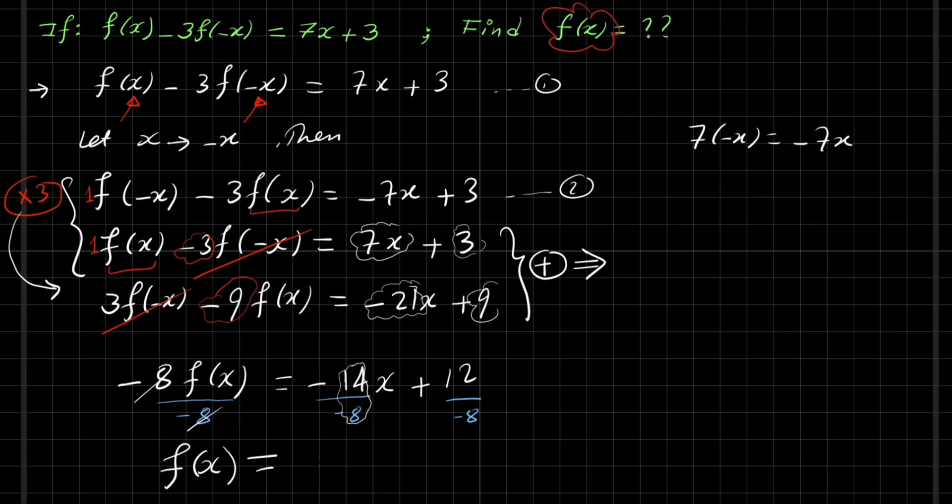And here minus, if we divide by 4 up and down, so this is 3 over 2. And this is the final answer for the expression of f of x.